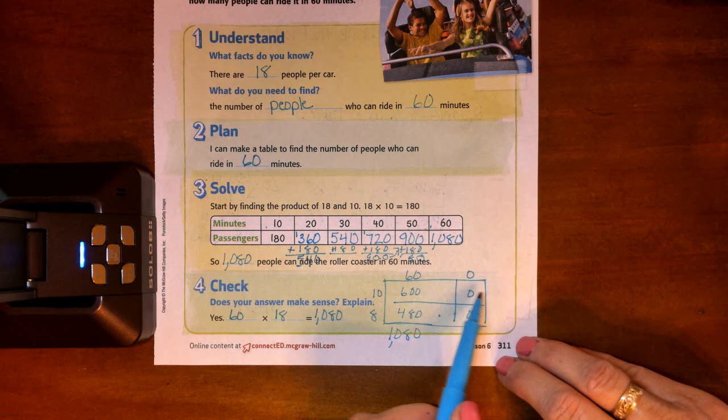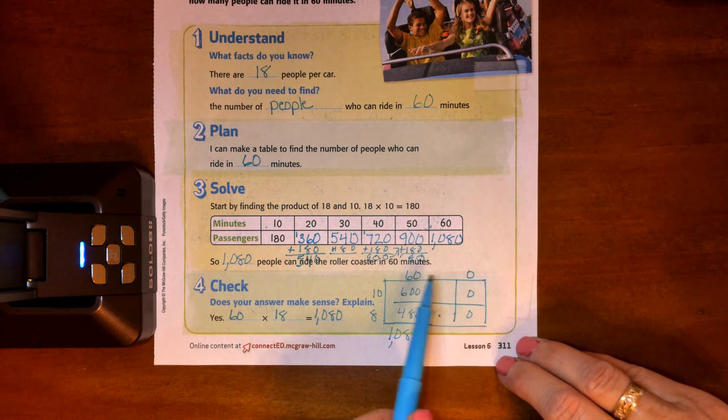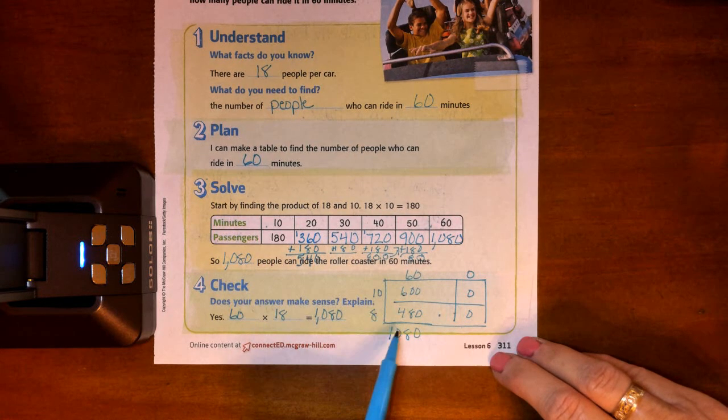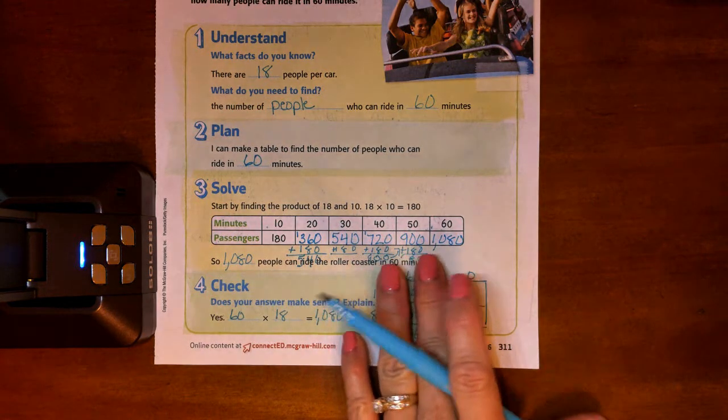Okay. So I broke these up into our place values, our tens and our ones. And I multiplied it out. And you can see that 600 plus 480 equals 1080. So now let's turn it over.